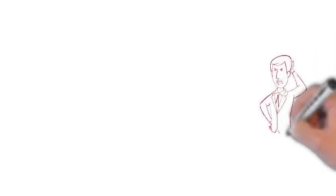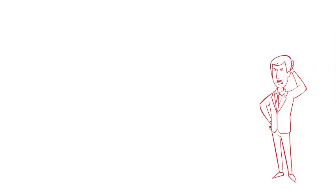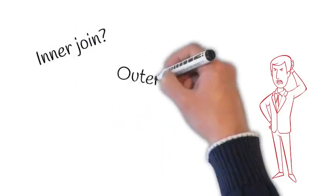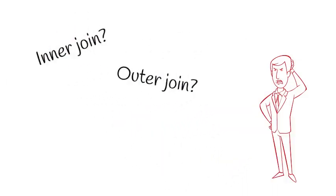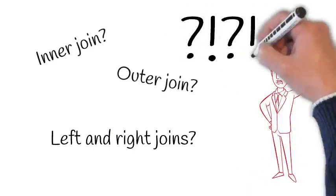One of the early challenges we run into with SQL is this idea of joins. What's an inner join? What's an outer join? How are they different? What about left and right outer joins? How do we make sense of all of this?